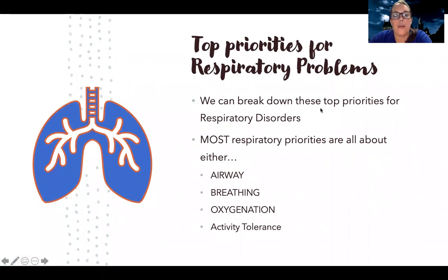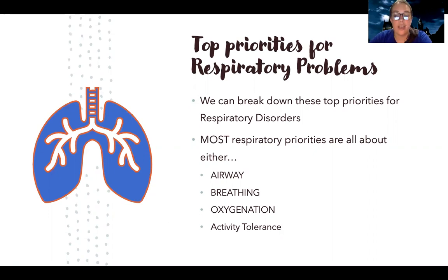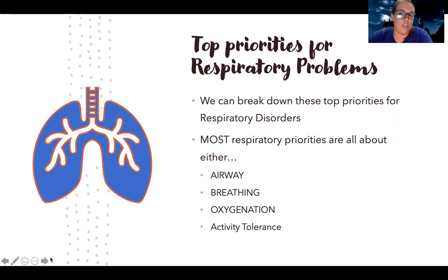The top priorities for respiratory problems are: keeping an open airway, breathing pattern, oxygenation — the ability to get oxygen into your tissues and get perfusion — and then activity tolerance, which is how well you're tolerating activities of daily living like brushing your teeth or eating. I'm going to break these down a bit more.